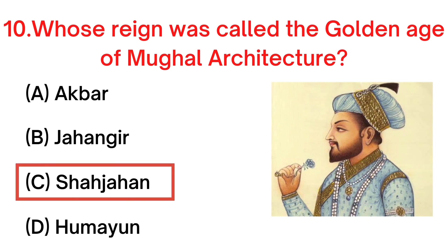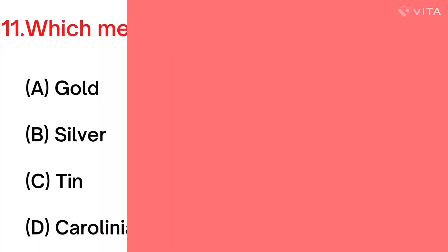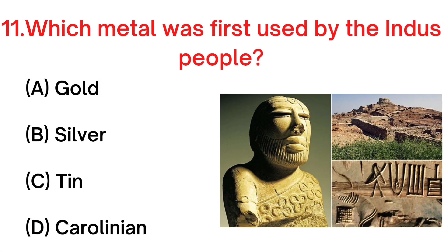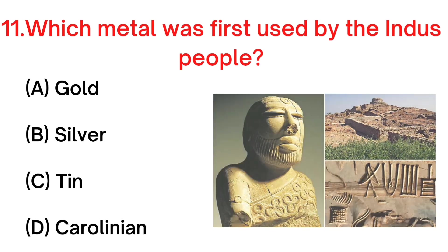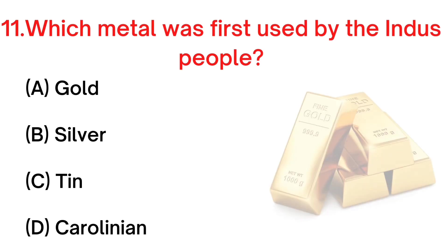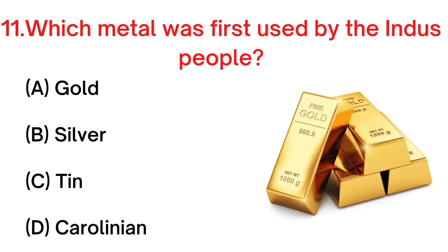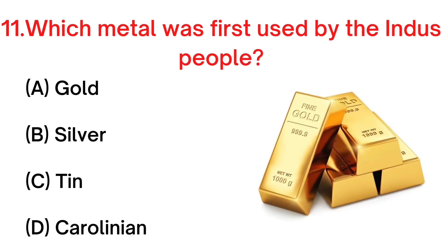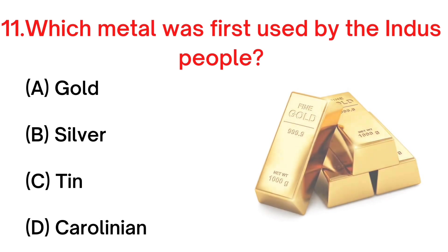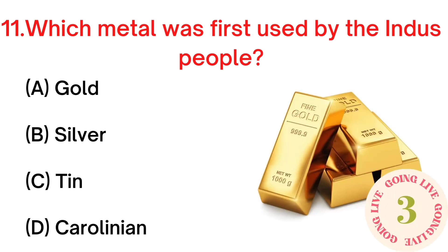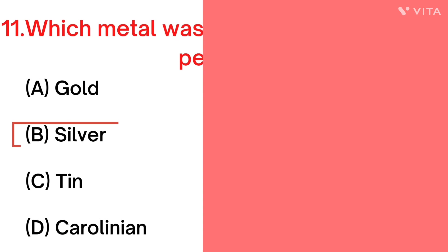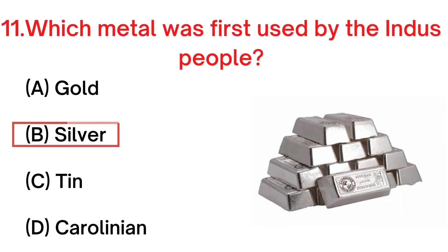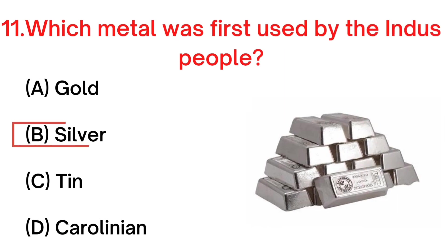Your next question: which metal was first used by the Indus people? A. Gold, B. Silver, C. Tin, D. Carolinian. Your answer is B. Silver.